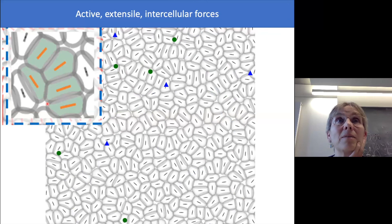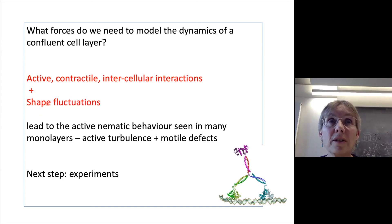So that's my conclusions. In order to get this active nematic behavior, we can get it from what we would have guessed physically, by putting just quite simply active contractile intercellular interactions into the model, and perhaps adding shape fluctuations. And of course, the next step is that this lends itself to lots and lots of different experiments, because it would be great to have measurements now of cell shapes and the fluctuations, the changes in cell shapes in different systems, and see if this fits in in any way with the picture I've talked about here. Thank you very much for listening.